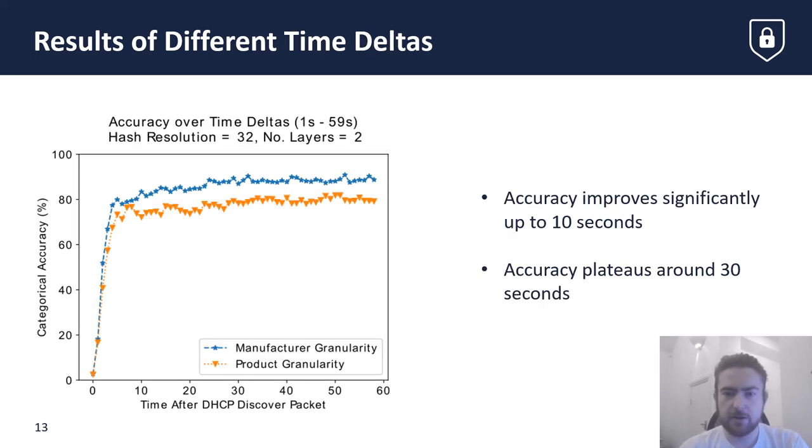By training the neural network repeatedly on datasets generated over different time deltas, we can ascertain how long we should analyze traffic before making the prediction. This graph shows that the accuracy increases sharply up to around 10 seconds, after which it continues to improve more gradually to around 30 seconds. Time deltas larger than 30 seconds tend not to improve accuracy significantly.